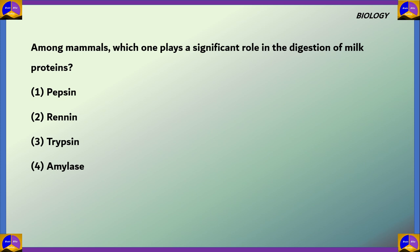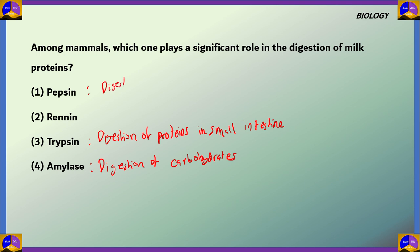Next question on biology. Among mammals which one plays a significant role in the digestion of milk proteins? Pepsin, rennin, trypsin and amylase. Now for this let's look at the function of each of these. Amylase is responsible for the digestion of carbohydrates. Trypsin and pepsin both of them are responsible for the digestion of proteins. Trypsin in the small intestine and pepsin for digestion of proteins in the stomach.